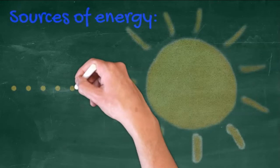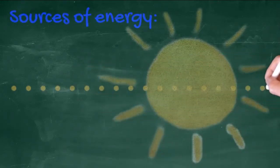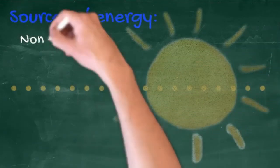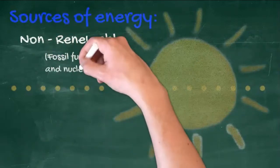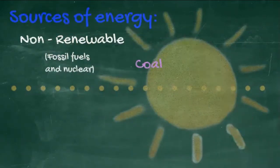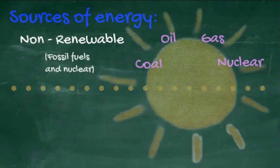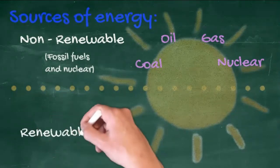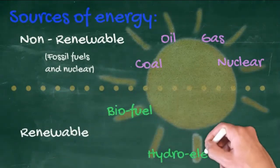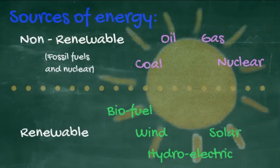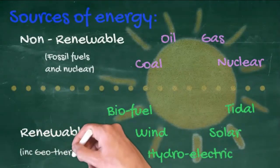Energy tends to break into two distinct types. There's non-renewable, which is the fossil fuels and nuclear — that's coal, oil, gas and nuclear — and then renewable: biofuel, hydroelectric, wind, solar and tidal.